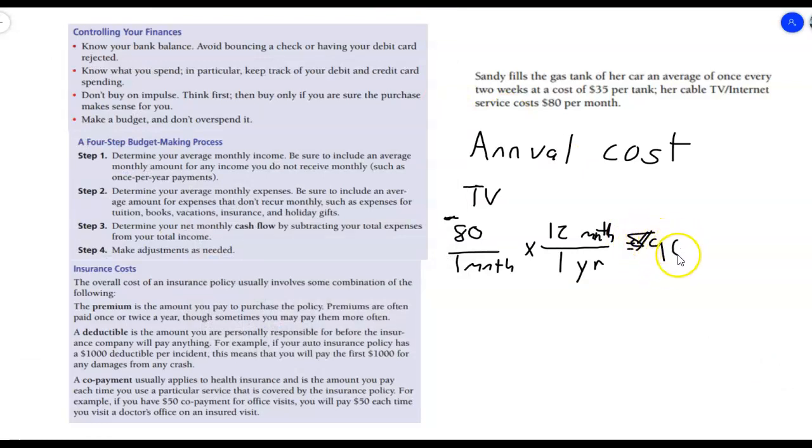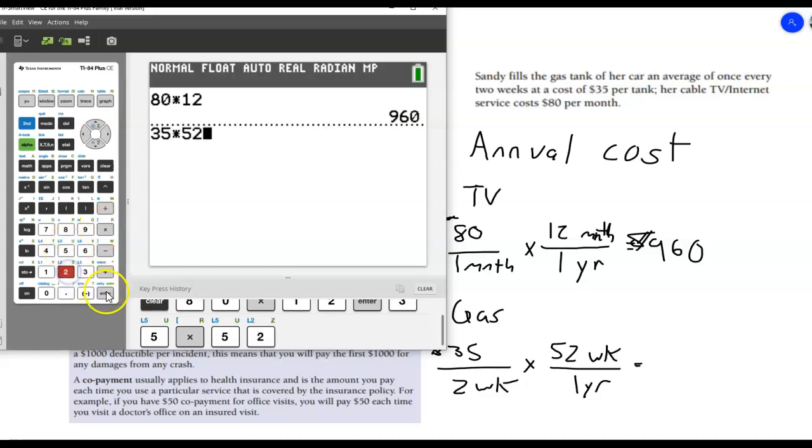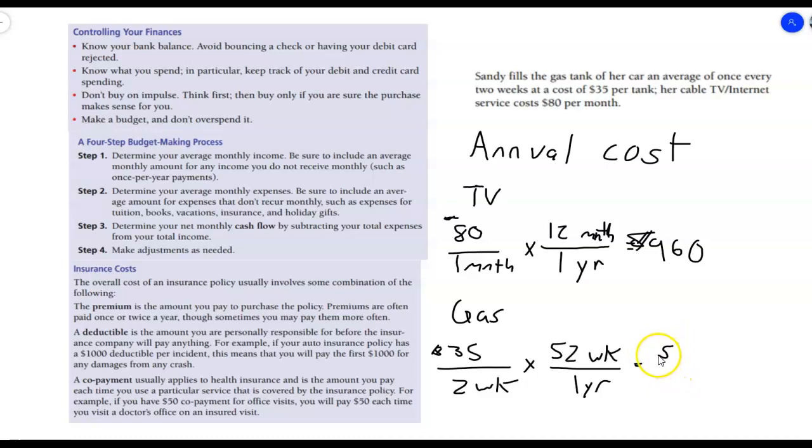Now let's go ahead and figure out the gas. We're going to do the same kind of thing here. We're going to say we spend an average of $35 for every two weeks. Now I want to convert this over to annual. So I know that there are 52 weeks in one year. Remember, I'm trying to get rid of the weeks. So I put them on opposite sides. And when we do this, we're just going to multiply across the top. So 35 times 52, and then we're going to divide by the bottom, which is just 2 times 1, which is 2. And we're going to get $910.